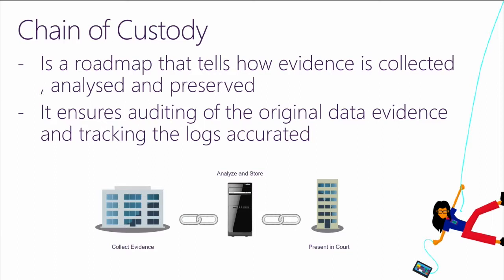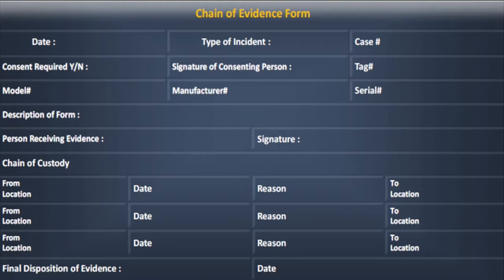Chain of custody is a set of rules for how we collect, analyze, store, and present data in court. If not going to court, we should know how to write a white paper or a report. Here's an example evidence form — it needs to have the date, type of incident, case number, and for a hard drive: model, manufacturer name, serial number, and description. Forensic classes are typically three to five days depending on knowledge level.